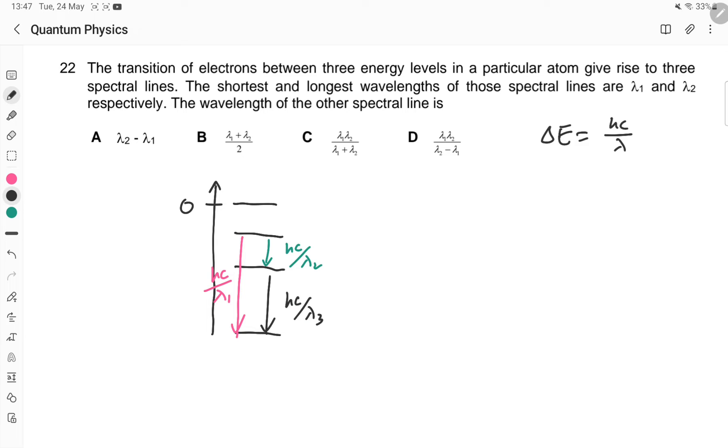You can see that the energy gap - let's just call this ΔE₁ and call this ΔE₂ and call this ΔE₃. So we have ΔE₁ is actually equal to - we are talking about the gap, this is the biggest gap - it's equal to the sum of the other two gaps.